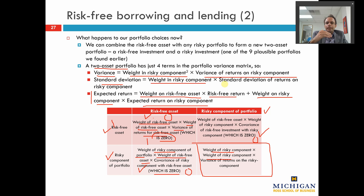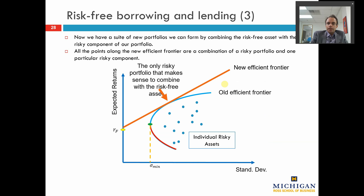In summary, the expected return on a portfolio combining the risk-free weight and the risky component is a weighted average of the returns on those two parts. The volatility is the weight on the risky component multiplied by the standard deviation of returns on the risky component. That assumption is going to be very important in coming up with the CAPM equation. Now that we have the risk-free asset, there will be a large number of combinations of the risk-free asset with many different risky portfolios.